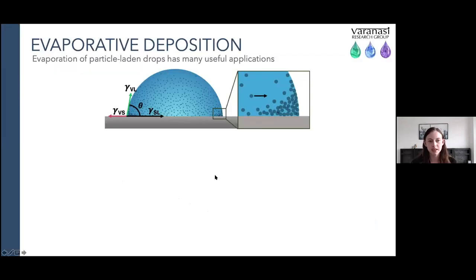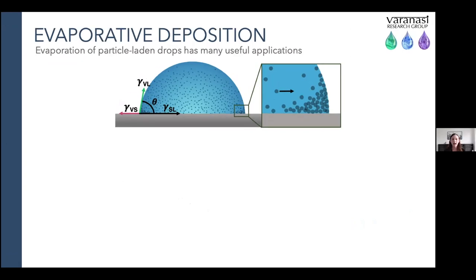Evaporation of saline drops is a variation of something called evaporative deposition. This usually involves the deposition of a drop containing particles onto a substrate and allowing it to evaporate. Based on the energetic interactions between the substrate, the solvent, and the particles inside the drop, different patterns and deposits can emerge. The most common is when the particles accumulate around the outer edge to form something called a coffee ring — a single ring-like shape of the evaporative deposit.